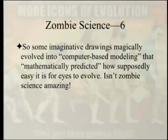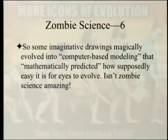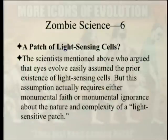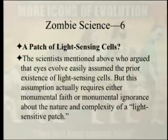Keep in mind: when people say the eye was poorly designed but got stuck that way — if it's that easy to design an eye in less than 400,000 years, why not redesign it to be well designed? The scientists arguing eyes evolve easily assumed the prior existence of light-sensing cells — but this assumption requires either monumental faith or monumental ignorance about the nature and complexity of a light-sensitive patch.